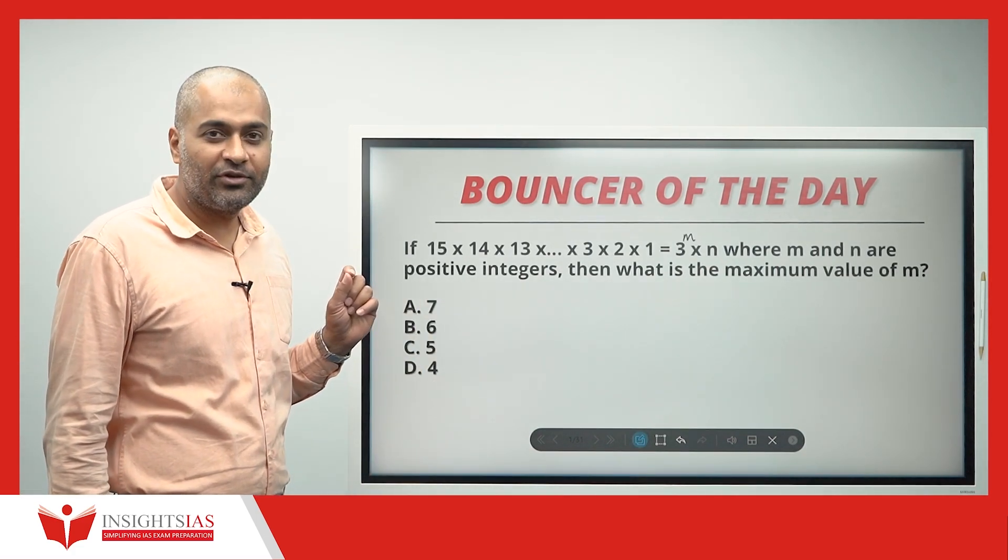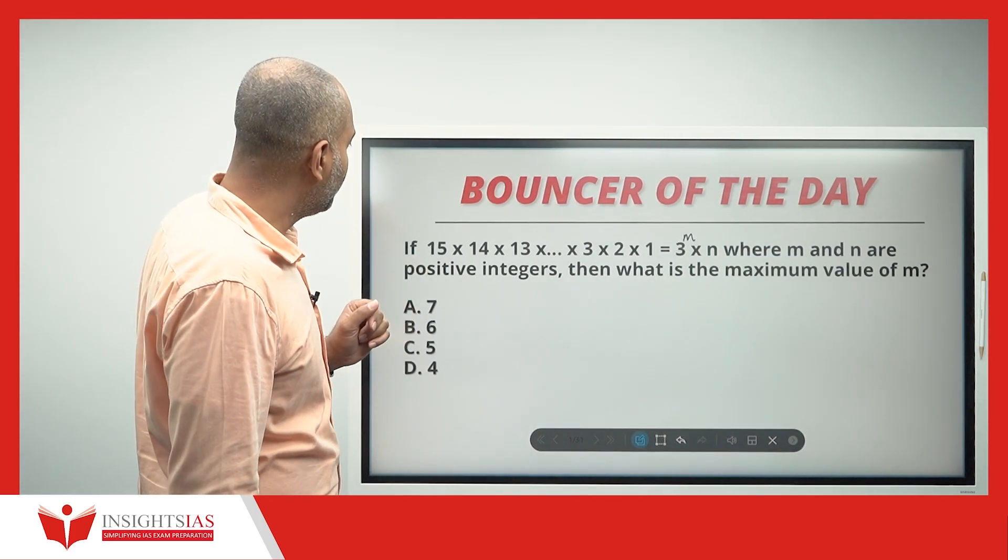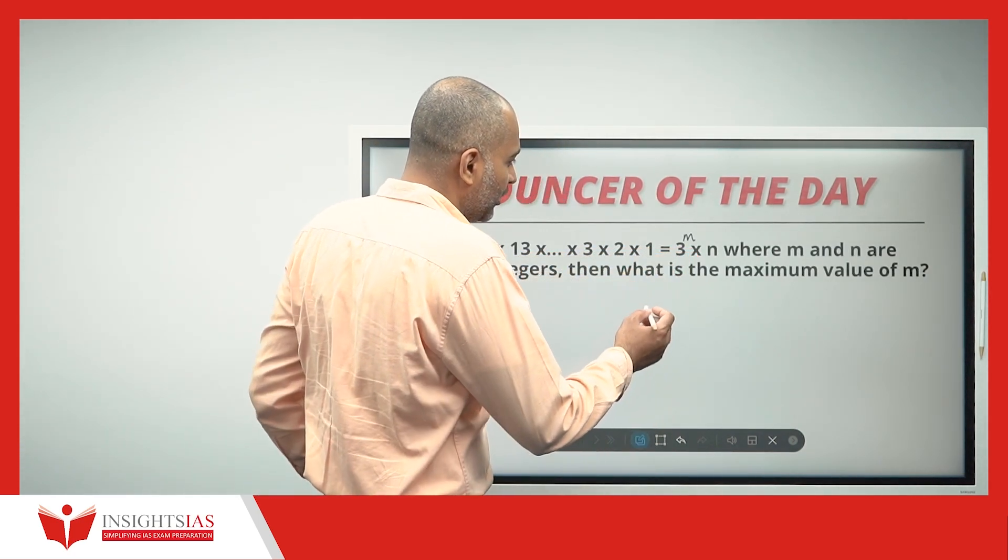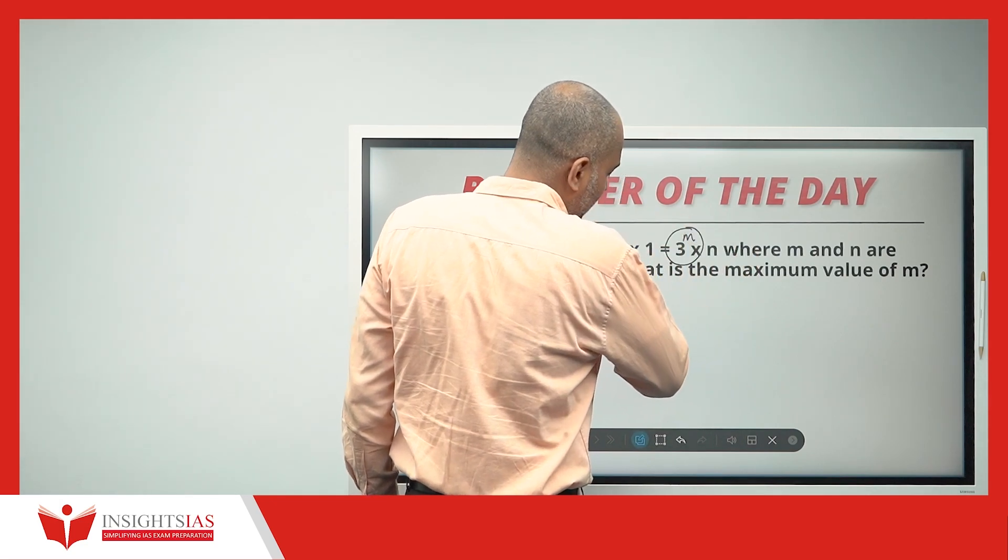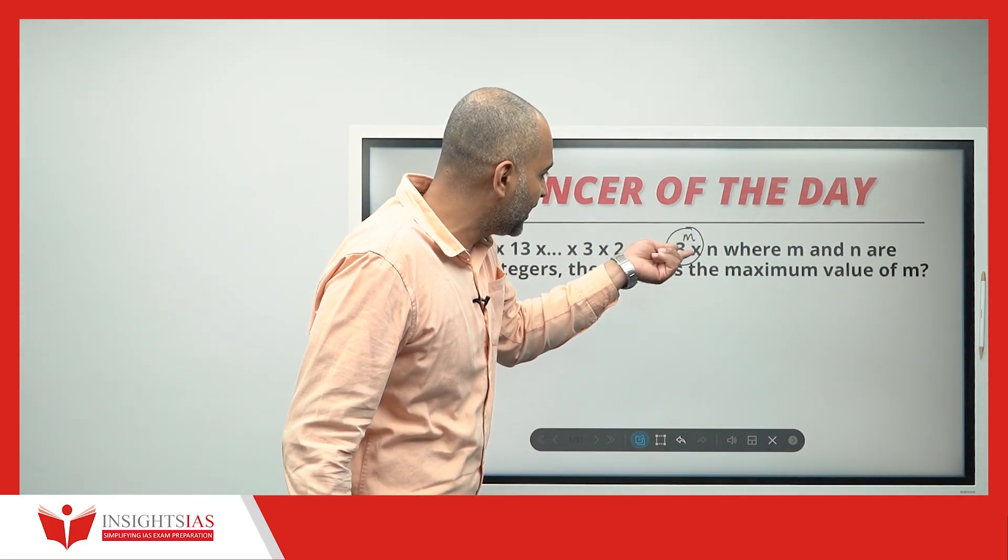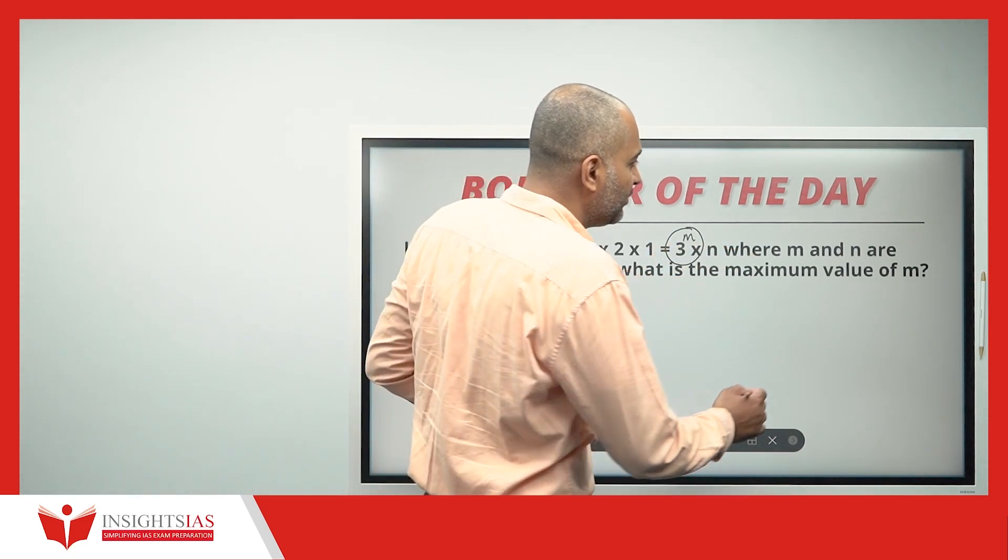This is yesterday's bouncer question. This was a previous year question also. 15 into 14 into 13, up to 1, where you have to find 3 power m into n. You have to write this in the form of 3 power m into n, where m and n are positive integers. Then what is the maximum value of m?